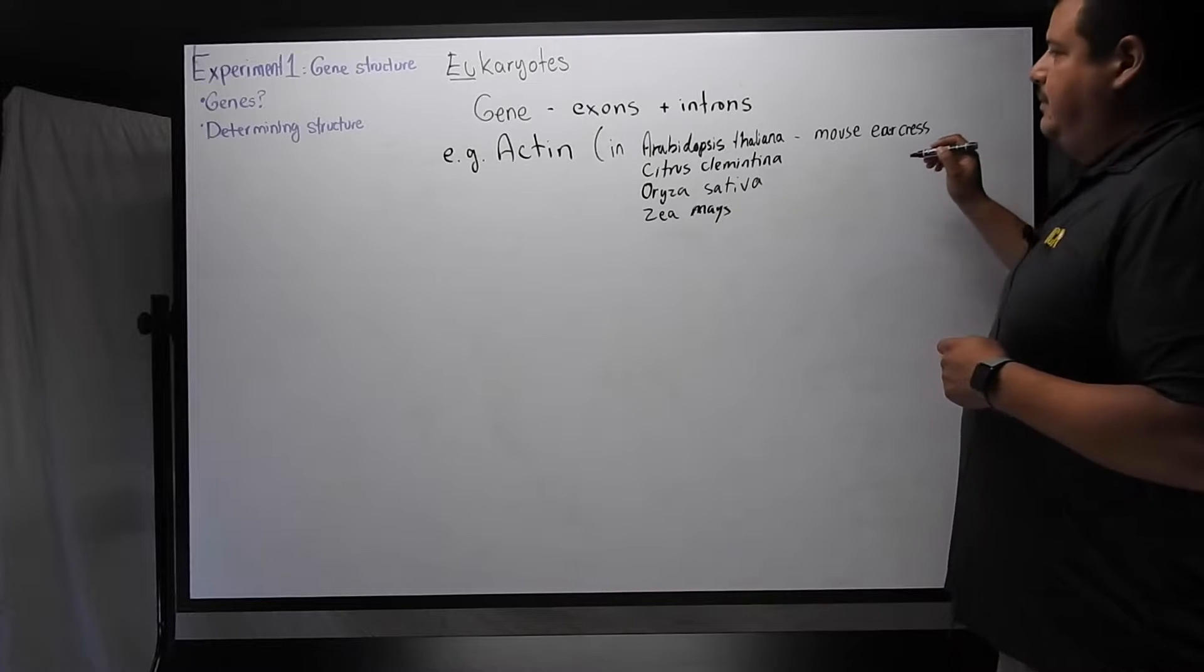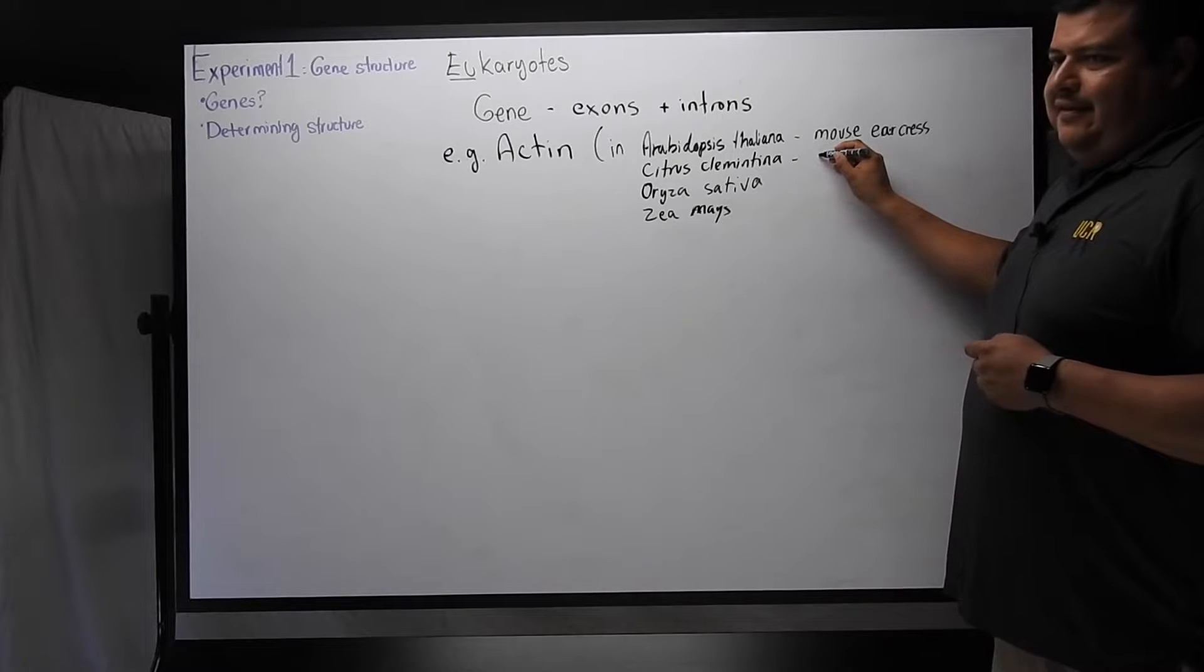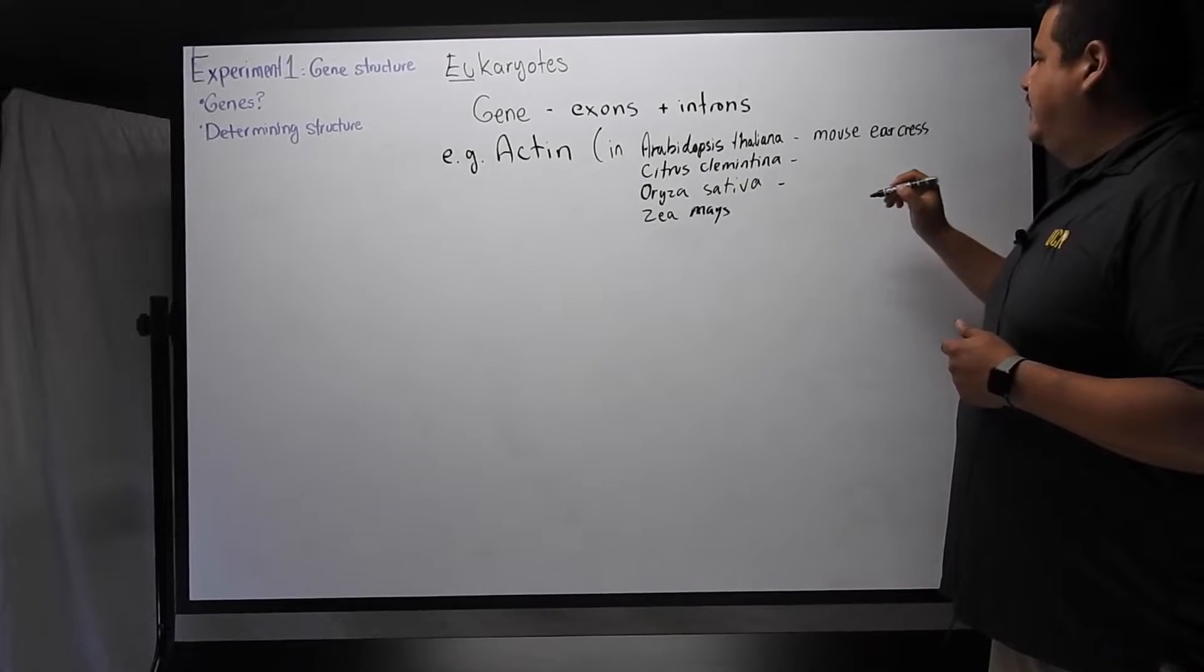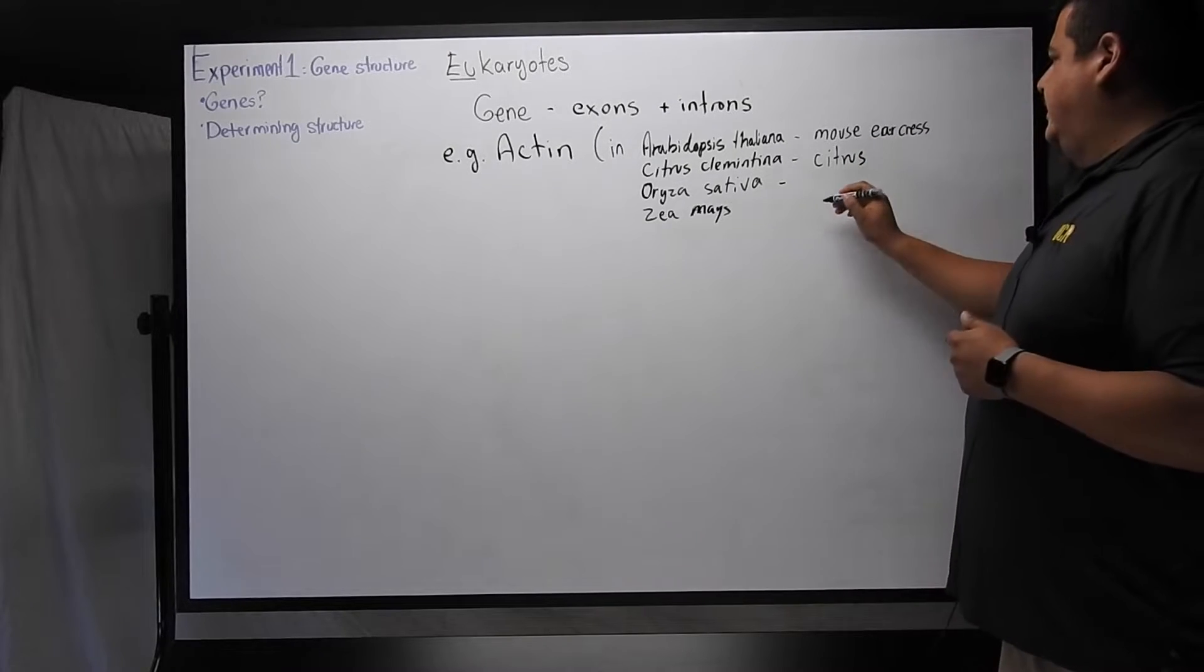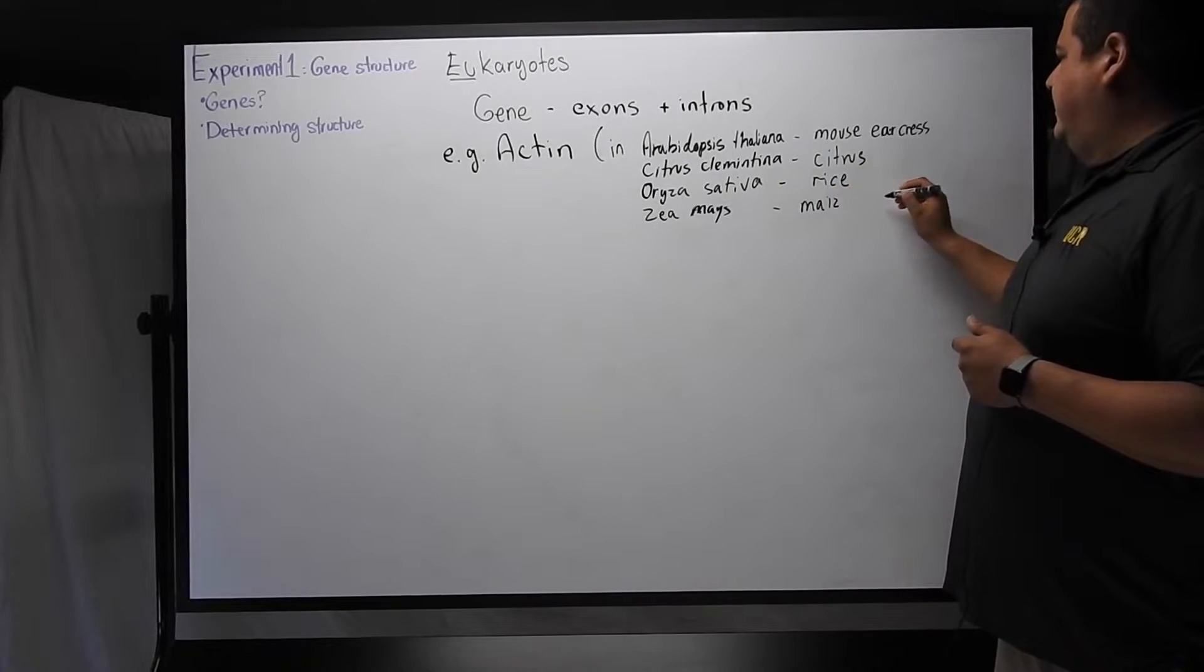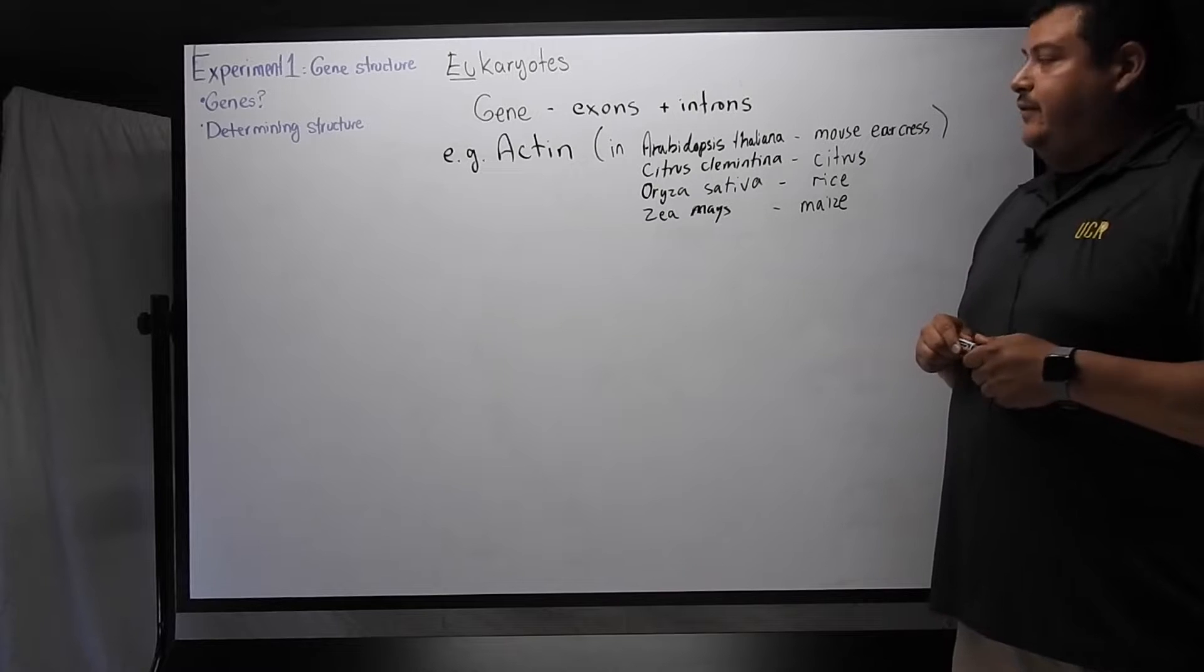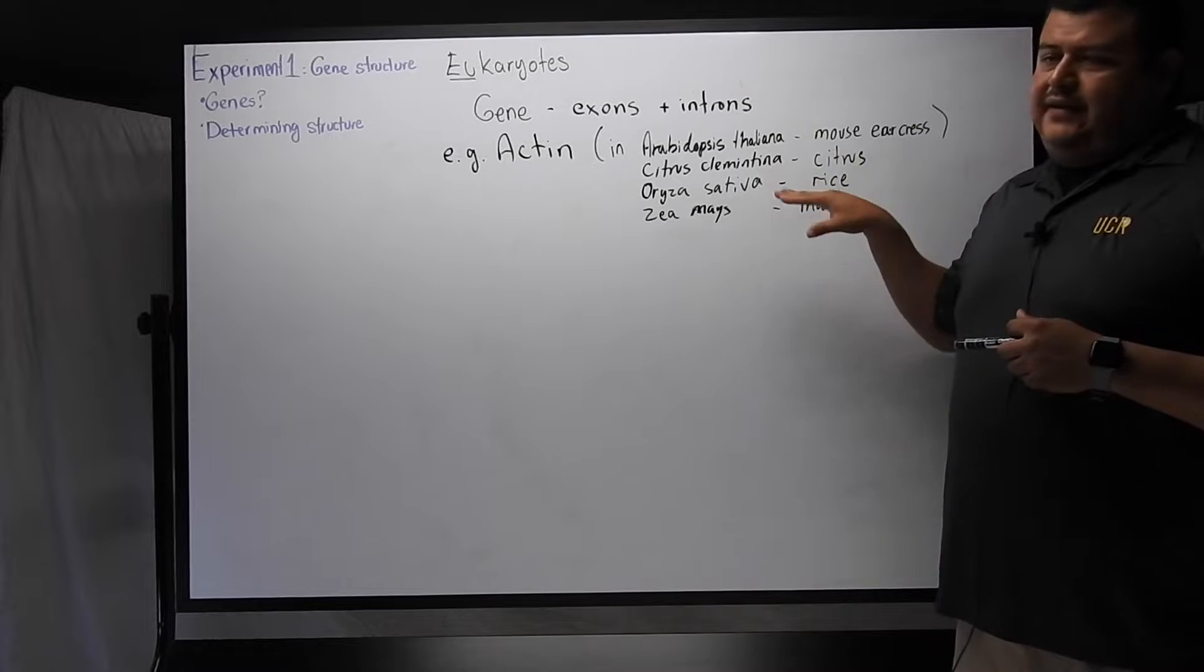In Arabidopsis thaliana, in Citrus clementina, Oryza sativa, and Zea mays. More commonly known as mouse ear cress, this is a very common model organism in the plant world. Citrus is, you can think about as a cutie. Oryza sativa is rice, and Zea mays is maize. So we're going to look at the actin gene structure in four different plants.